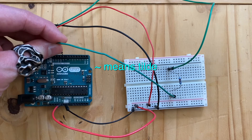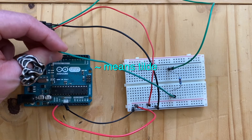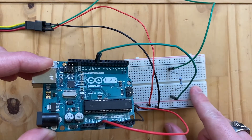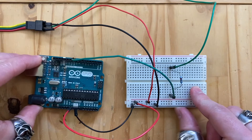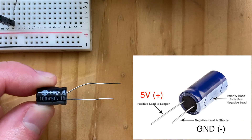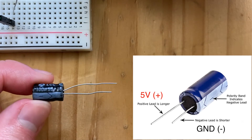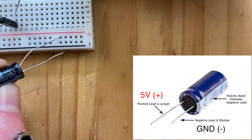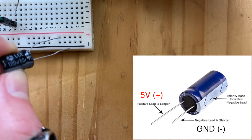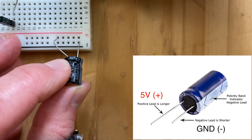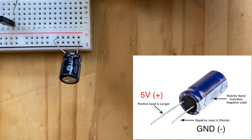PWM is indicated by the squiggly tilde sign — I'm going to connect it to digital pin number 9. Finally, we're going to put a capacitor between power and ground. Make sure you put it in the right direction: put the positive polarity to 5V and the negative polarity to ground. Please be careful about this.